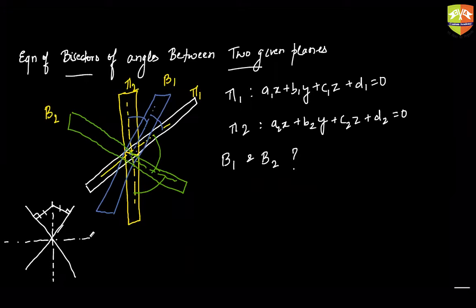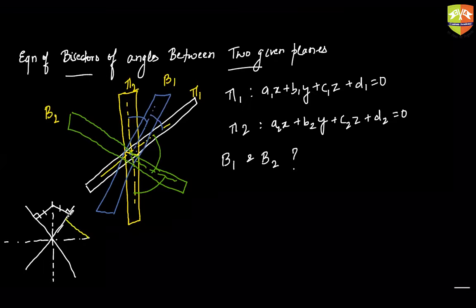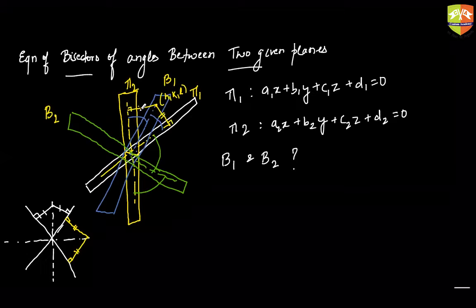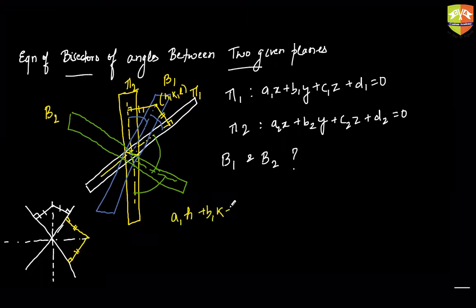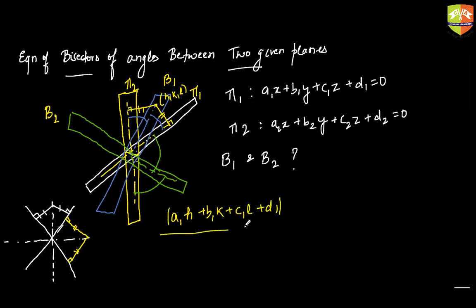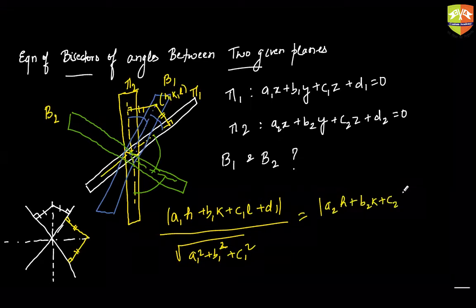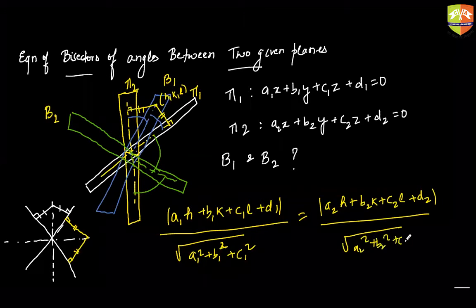Can I say bisector planes are the locus of such points which are equidistant from these two planes? So this and this distance should be equal. We already know the formula for distance of any point — let's say I take any generic point (h, k, l). Can I say the distance of this point from π1 and π2 planes must both be equal? So you can say: (a1·h + b1·k + c1·l + d1) / √(a1² + b1² + c1²) = |(a2·h + b2·k + c2·l + d2)| / √(a2² + b2² + c2²).